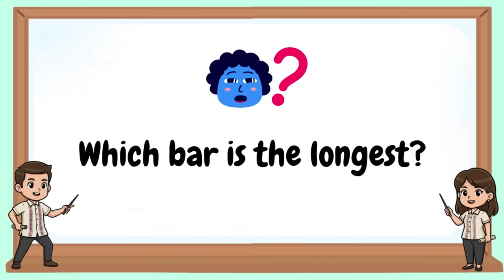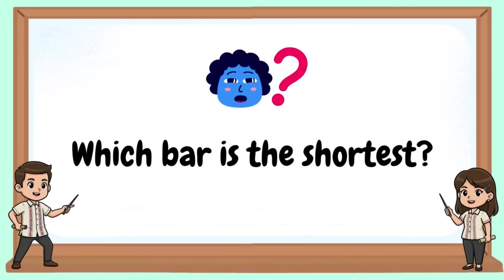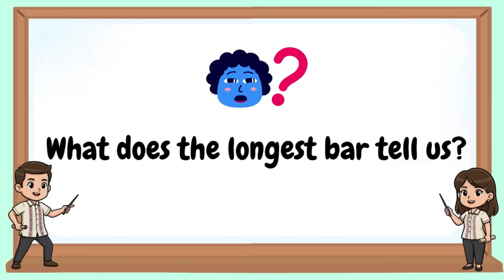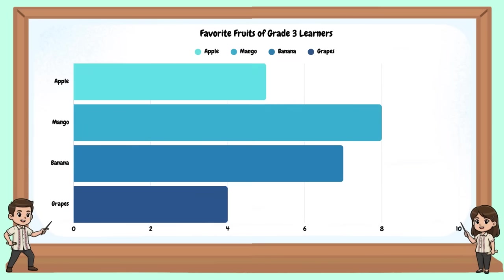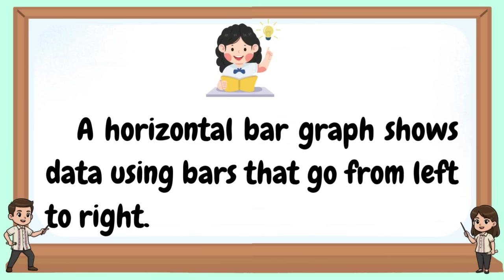Which bar is the longest? What does the longest bar tell us? A bar graph helps us see and compare information easily. A horizontal bar graph shows data using bars that go from left to right.